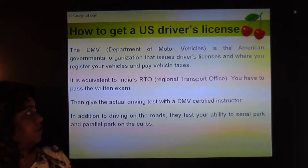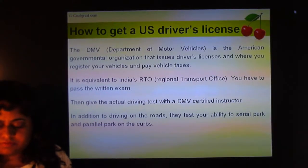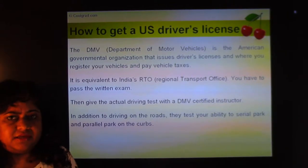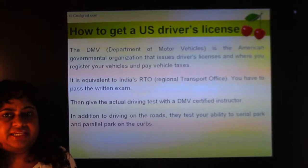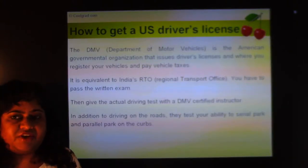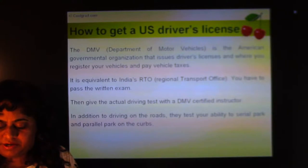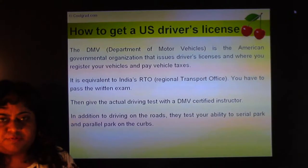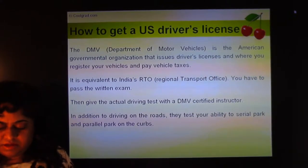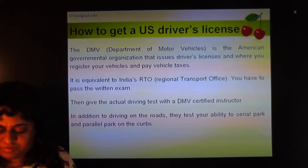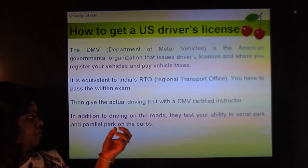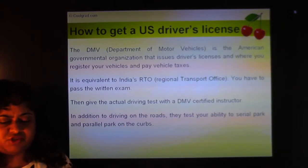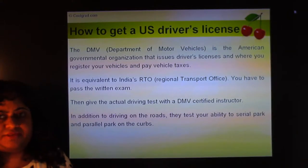To get a US driver's license, you go to the DMV — Department of Motor Vehicles — which is the US equivalent of India's RTO. It's a governmental organization that issues driver's licenses, registers vehicles, and collects vehicle taxes. You usually first take a written exam demonstrating your proficiency of the rules and regulations, which varies from state to state. If you move states — say from Arizona to California — within 10 days you're required to inform the DMV of your change of address and get a state driving license for your new state.